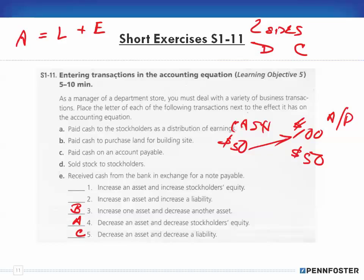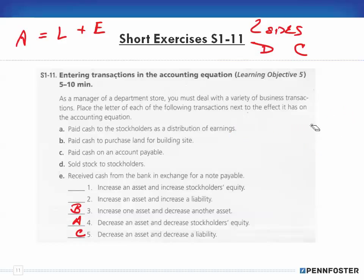Transaction D: sold stock to stockholders. Selling stock means you're receiving cash, so cash — an asset — is increasing. And since common stock is an equity account, you're increasing stockholders' equity as well. So this is an increase in an asset and an increase in stockholders' equity — category D.